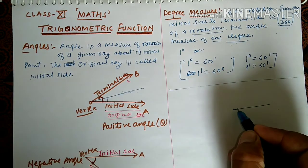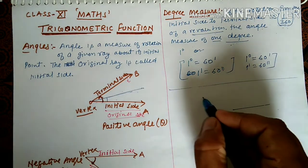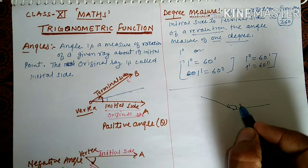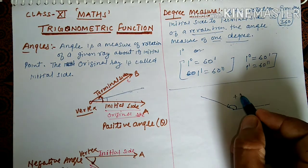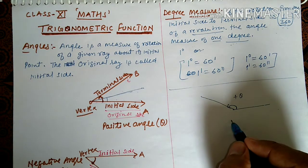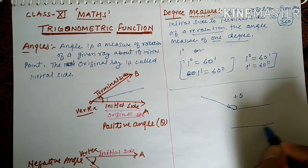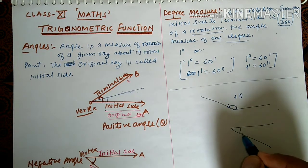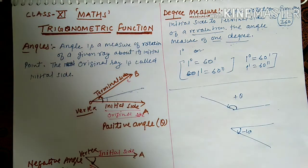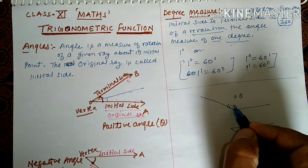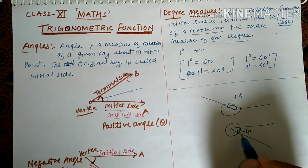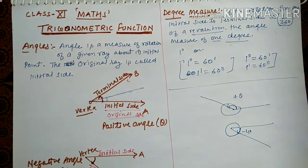If the rotation is in the anticlockwise direction from the initial side, we say it is a positive angle. And if the terminal side is rotating in the downward, clockwise direction — suppose by 40 degrees — we say it is minus 40 degrees. So, anticlockwise direction gives a positive angle and clockwise direction gives a negative angle.